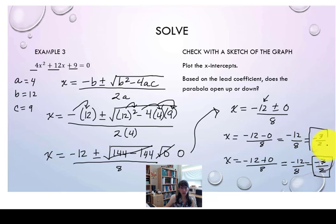So you can see there really are two solutions, but since they are identical, we say there's only one unique real solution. The ordered pair would be negative 3 halves comma 0. That describes the x-intercept or the zero of the function.